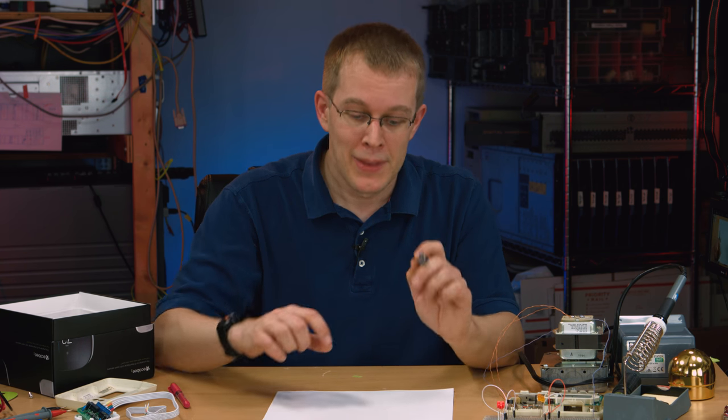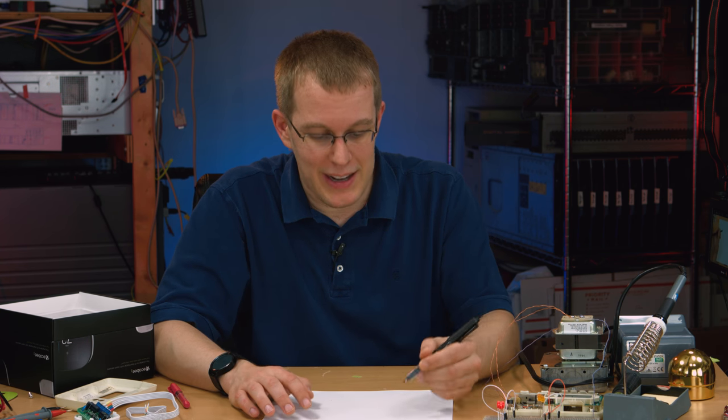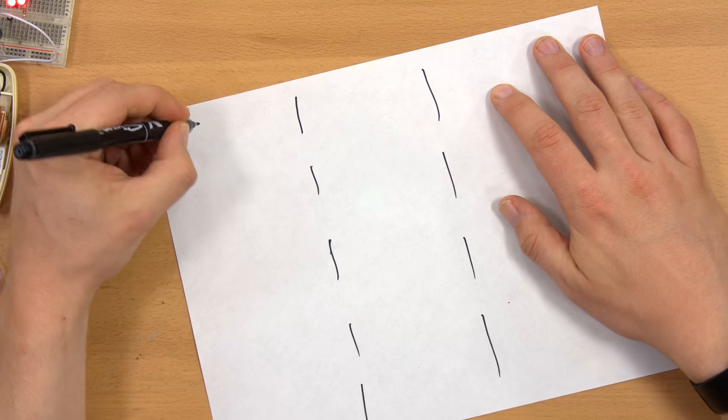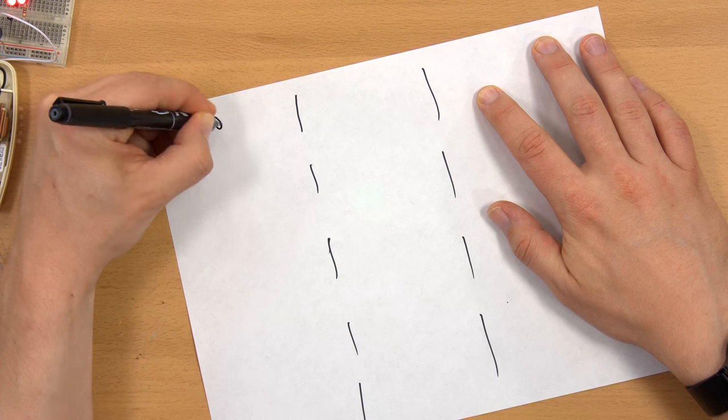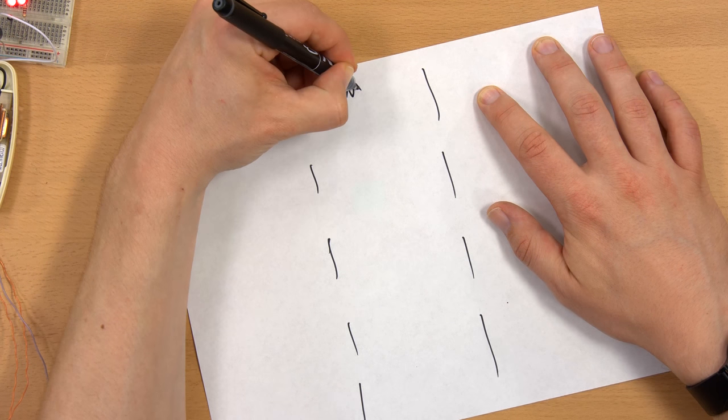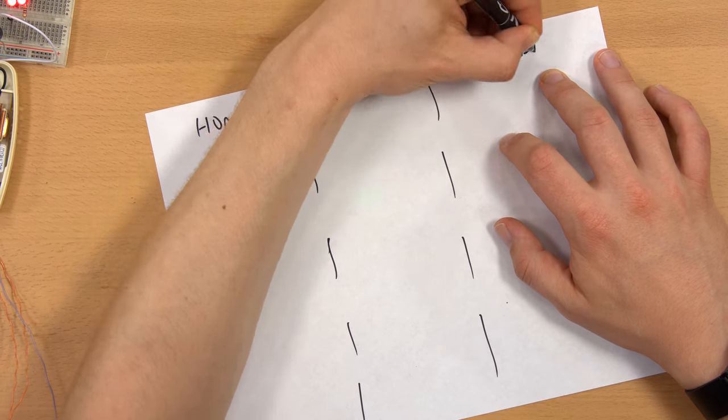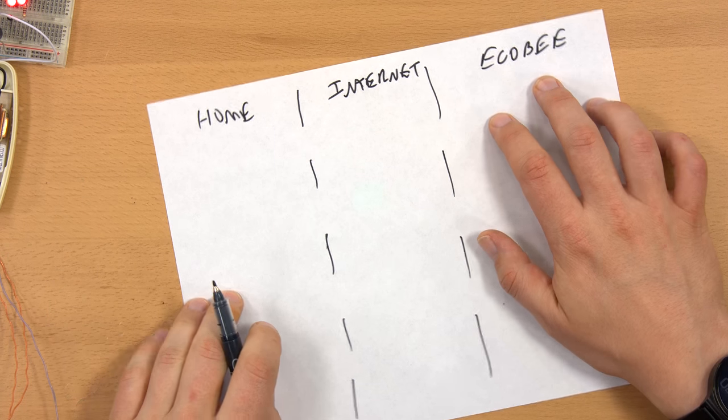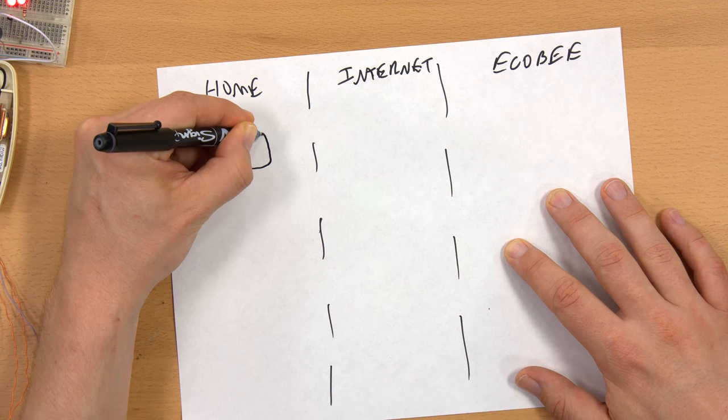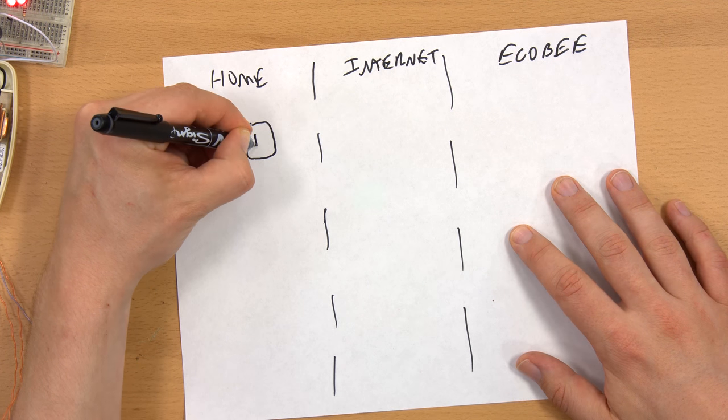Let's say this is your home network. In this area, this is the internet. And over here is Ecobee's data center.